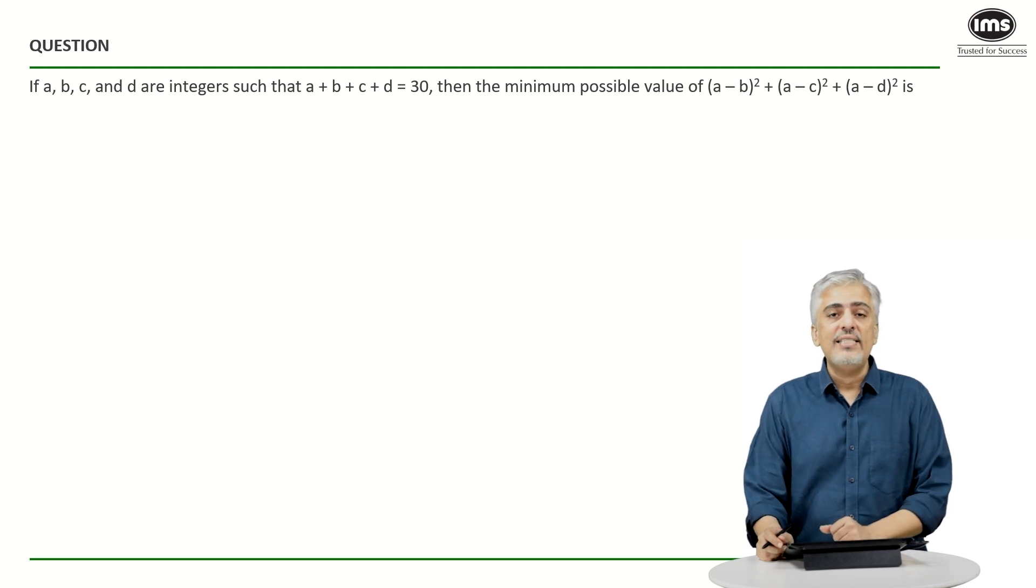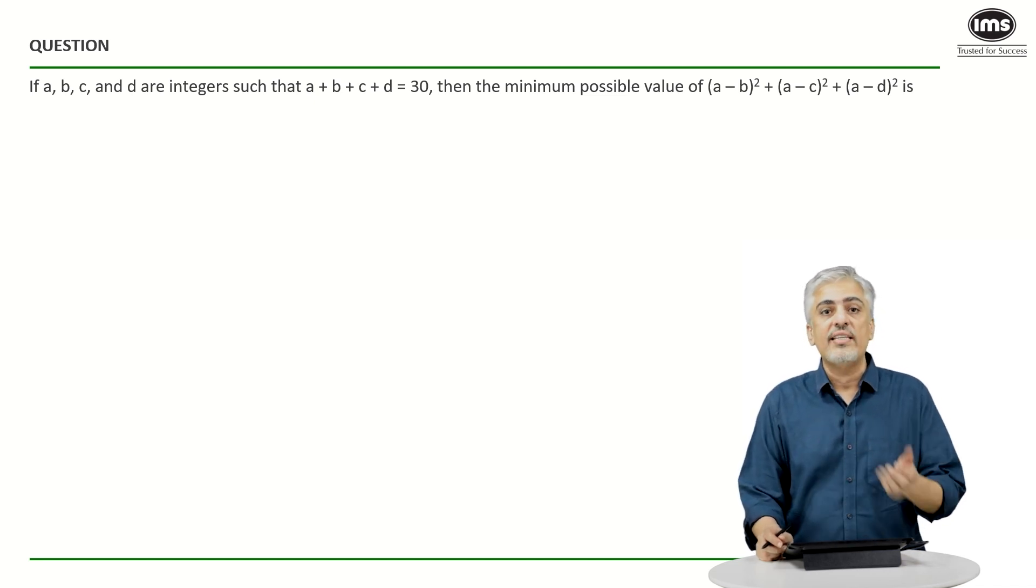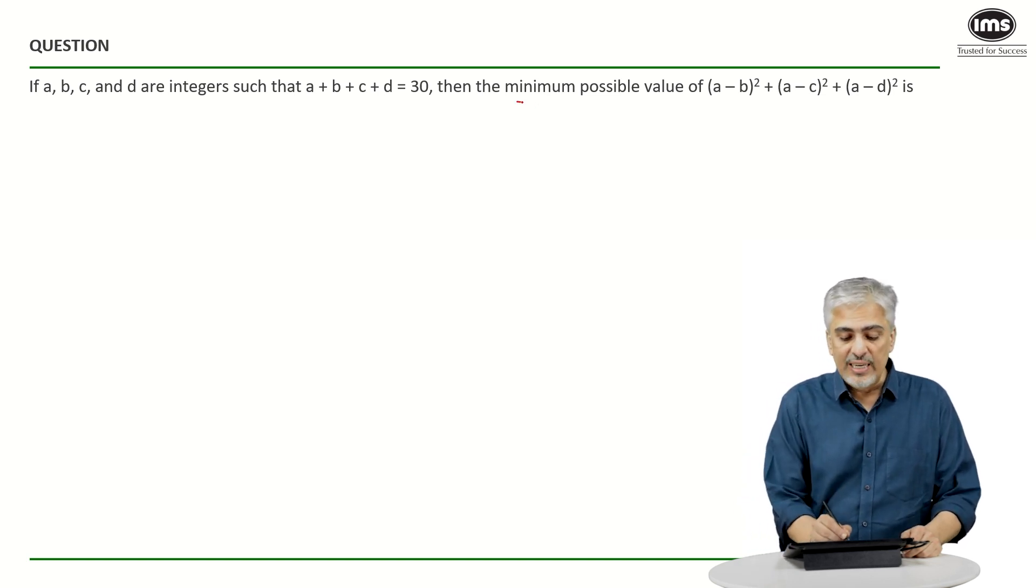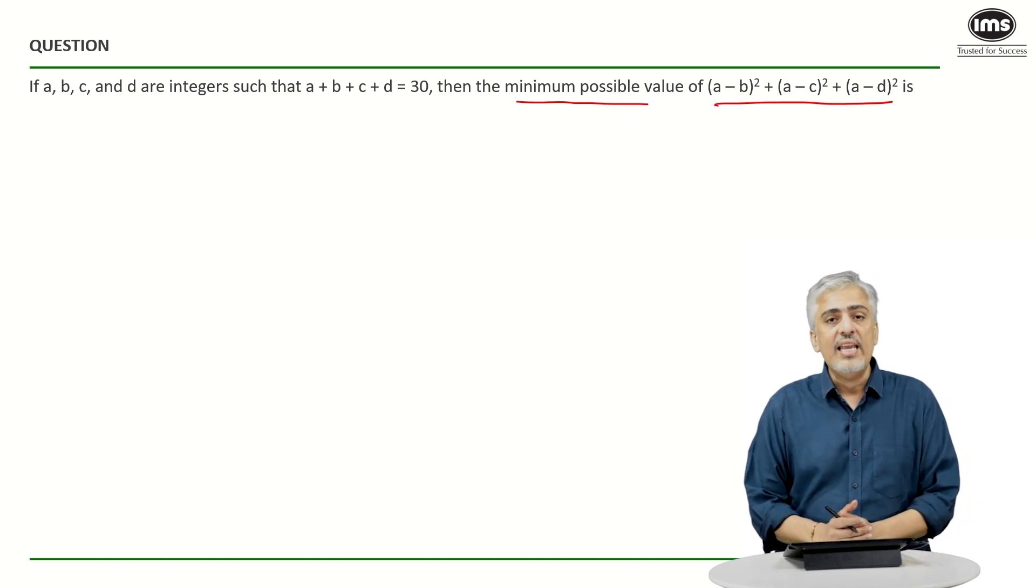They have told us that A, B, C, D are integers. Integers can be positive and negative both. And they have told us A plus B plus C plus D is 30. Then what is the minimum possible value for A minus B the whole square plus A minus C the whole square plus A minus D the whole square.